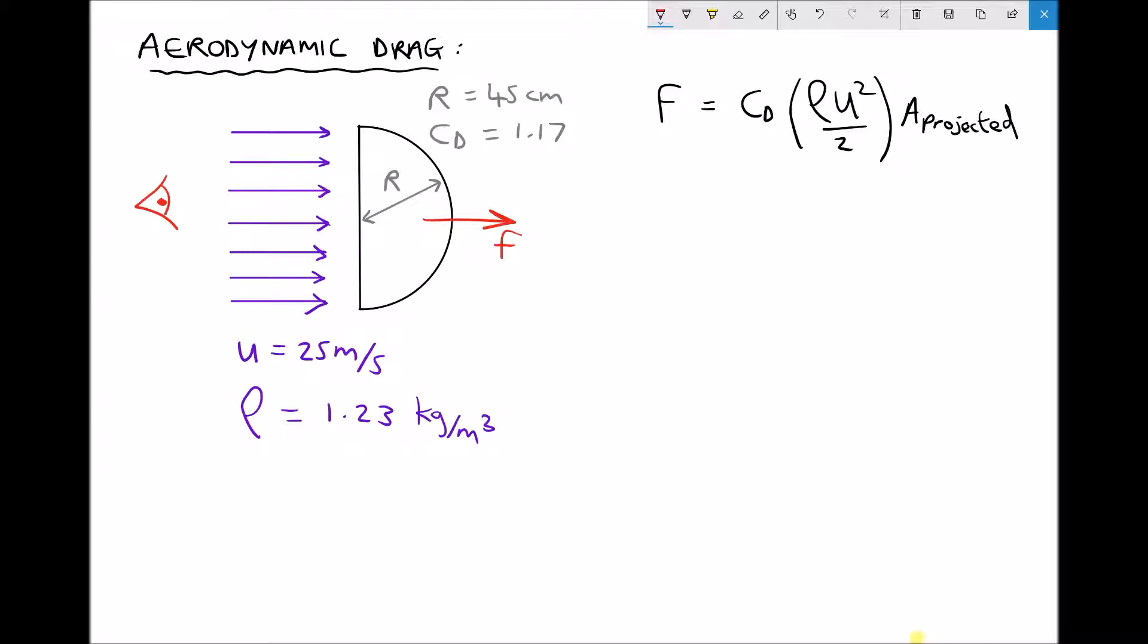Coefficient of drag values are normally determined experimentally. For a hemisphere, when the fluid is flowing at right angles to the flat surface, the coefficient of drag is 1.17. This changes dramatically if the air flows towards the curved surface.